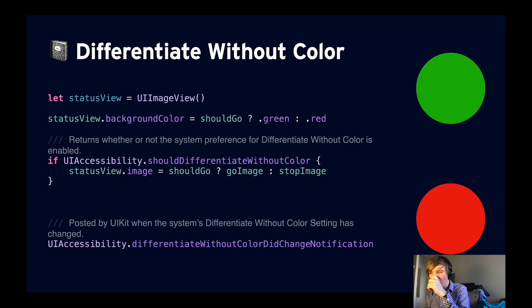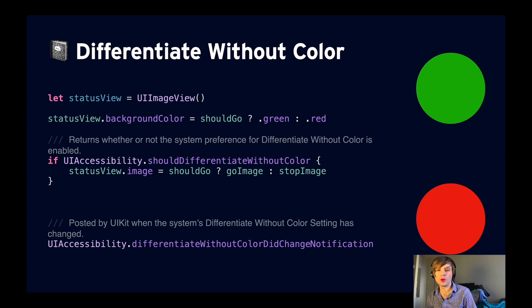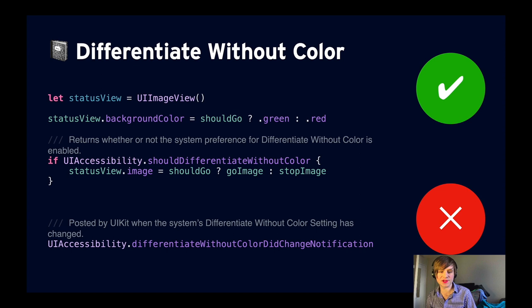Let's talk next about differentiate without color. This is a feature that replaces user interface items that rely solely on color to convey information. If we imagine a view that's green when the user should go and red when they should not go, users with color blindness might not be able to tell the difference. To fix that, we check `UIAccessibility.shouldDifferentiateWithoutColor`, and then add an image with a check mark or an X to indicate without color whether the user should go or not. There's also a notification version we can subscribe to if we want to know when the setting changes.